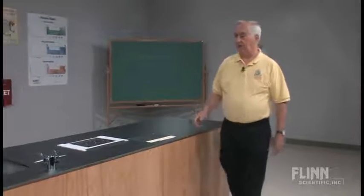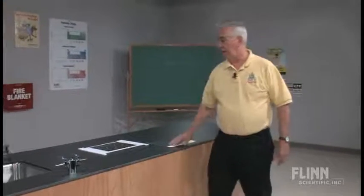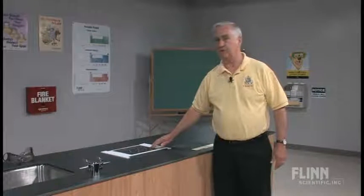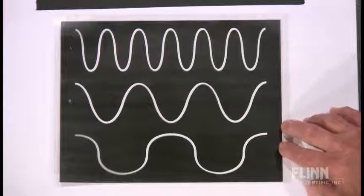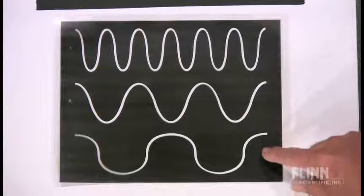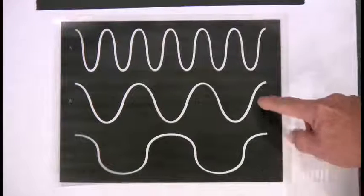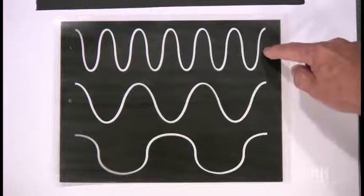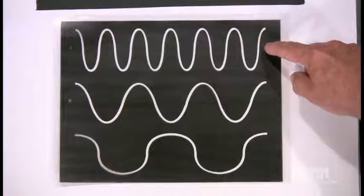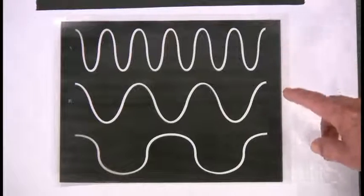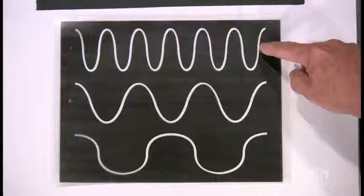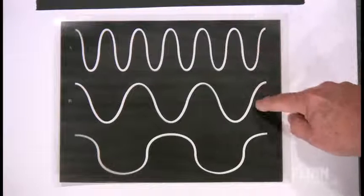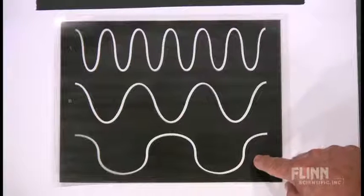I have up here a device with a transparency, and I have on it three different wavelengths. We have a long wavelength, an intermediate, and a short wavelength. We understand that the short wavelength is going to be the blue light, the intermediate would be somewhere in the green range, and the long wavelength would be red.